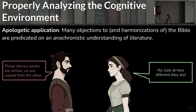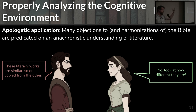A lot of objections to scripture as well as harmonizations of scripture are predicated on deeply anachronistic understandings of how literature works. For example, a lot of internet skeptic arguments say: look, the Epic of Gilgamesh has a guy with a boat, the Bible has a guy with a boat, they're similar, so the Bible must have copied from the other one — therefore the Bible's value is negligible. Then the response many Christians give is to immediately point out all the differences: the number of days is different, the location is different, Noah isn't Gilgamesh, and so on.